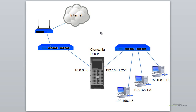Some of those recommendations include having at least two network cards on your server. What I have on this particular topology is my Clonezilla server in the middle, and I have two different network cards which will be used for two different networks. The one on the left-hand side will be my local area network — my typical work environment — plugged into a switch, and then the switch is plugged into a router, which will then access the internet.